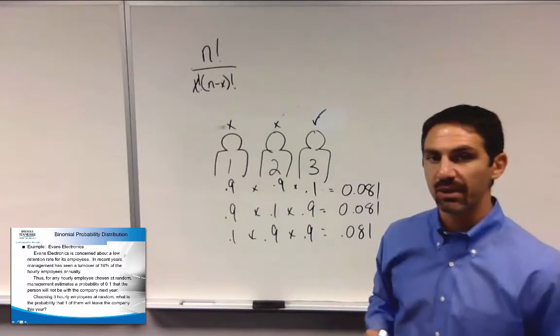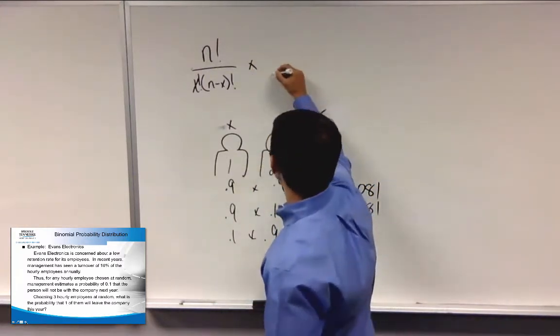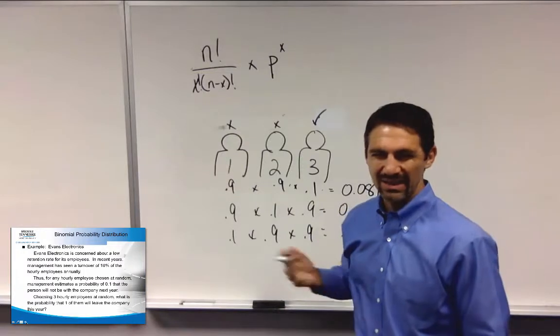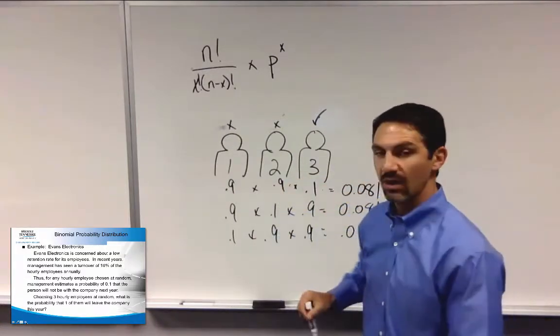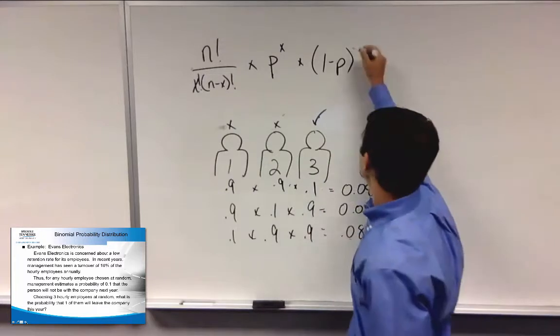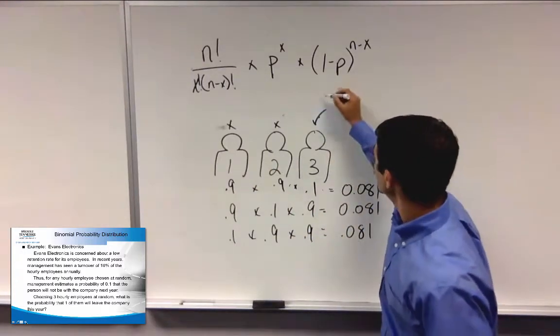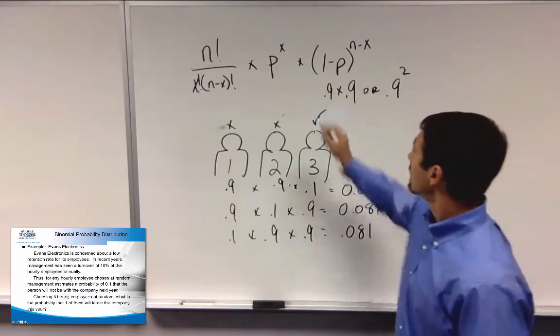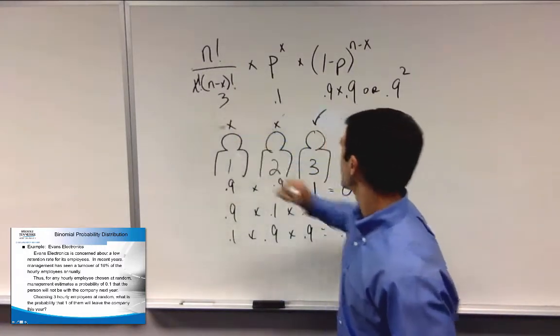What does that refer to? That refers to the number of combinations, and you see here, you have three of them. Then you're going to multiply it by successes. Success, then, is the probability of success to the x power. So what's the x power? The x power is basically the number of times. So 0.1 to the first power, because x is only equal to 1, x being the number of successes. Multiply that by then 1 minus p, which is our failures. And how many times do we fail? It's our sample size minus the number of times we succeed. And so here's our failures. What is this? This is 0.9 times 0.9, or 0.9 to the second power. This is nothing more than 0.1, because it only happens once. And the number of combinations is 3.